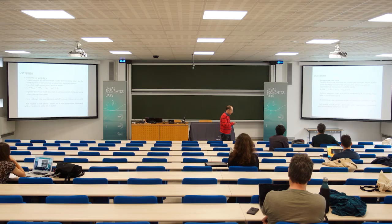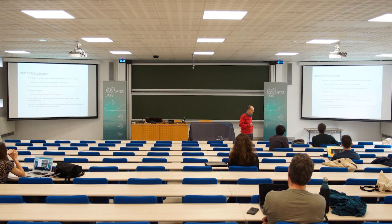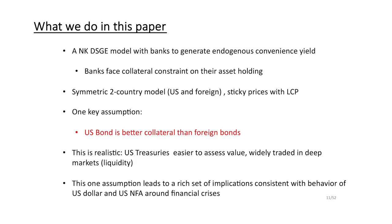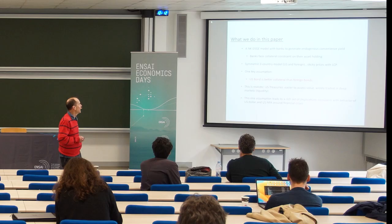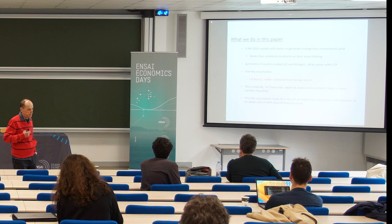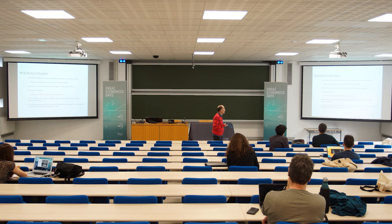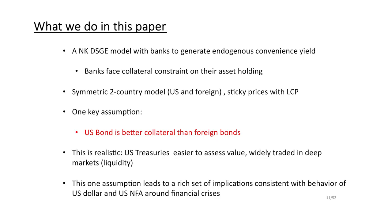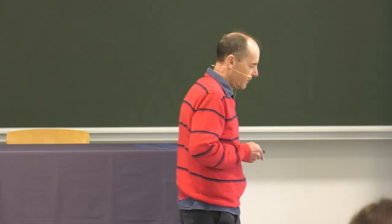Here's what we do in the paper. It's basically a plain vanilla New Keynesian DSGE model. Banks face collateral constraints — this is a Gertler-Kiyotaki type framework. It's a symmetric two-country model. One key assumption that drives the whole thing — without this assumption we'd have nothing — is that the US bond is assumed to be better collateral than foreign bonds.